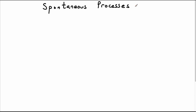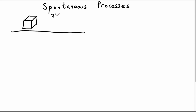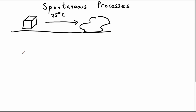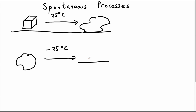Let's consider a few more spontaneous processes. Let's imagine that we have an ice cube at, say, 25 degrees C. We know what's going to happen — we're going to end up with just a puddle of water. On the other hand, if we have a puddle of water and we're working at negative 25 degrees C, it's going to end up freezing. So freezing is spontaneous at negative 25 degrees C, and melting is spontaneous at 25 degrees C, because we're on either side of the melting point.